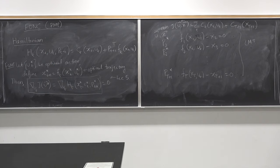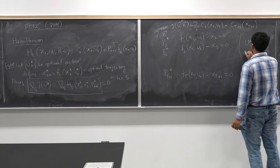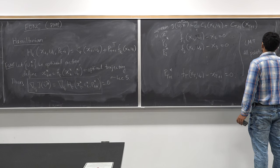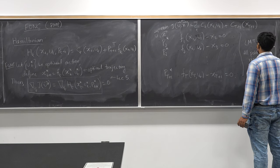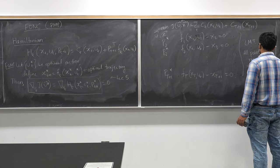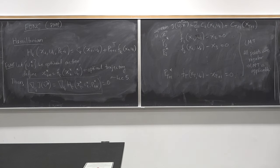No matter which way we tried to approach this problem, we would come to the same conclusion. These co-state vectors would now be Lagrange multipliers rather than co-state vectors, but the values are the same, the assumptions are the same — there is no difference whatsoever. In this case, all points are regular, so we can apply the Lagrange multiplier theorem.